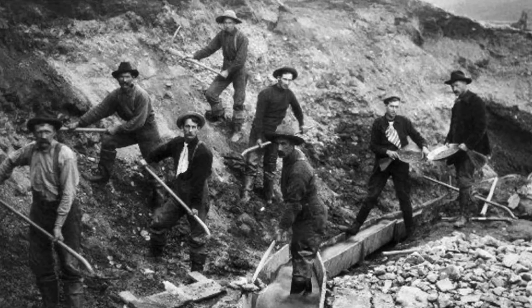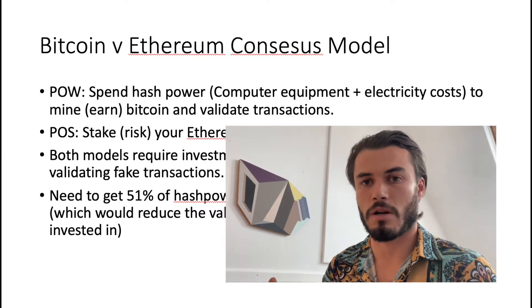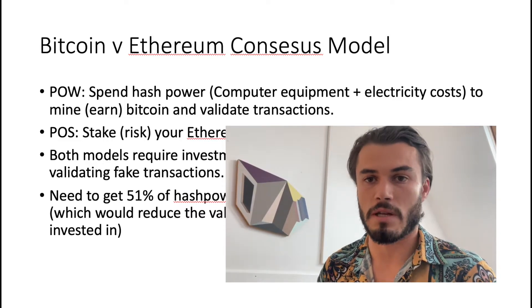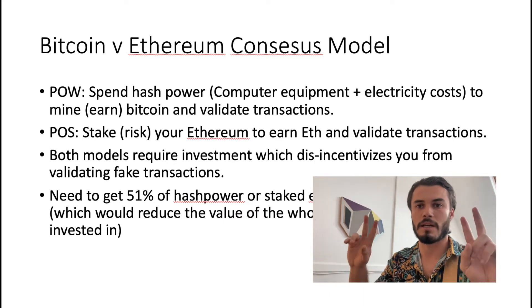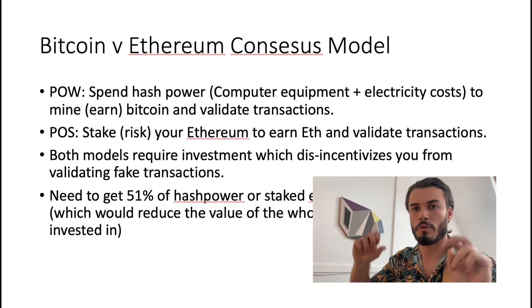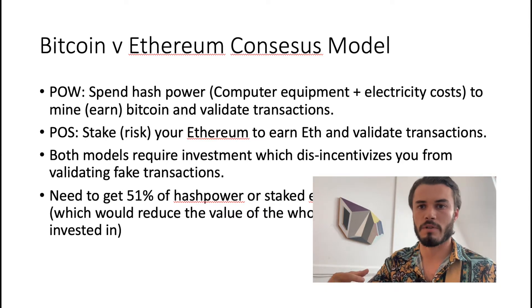So let's first dive into the differences. In proof of work we have miners — people with really powerful computers who are solving complex mathematical equations. First they have to invest in buying the computer equipment, and then they have to invest in electricity costs to validate transactions. Both models require you to put in some sort of investment — whether electricity, money, or computing power — if you want to validate transactions. That's what consensus means: all the miners come to agreement on the transactions.